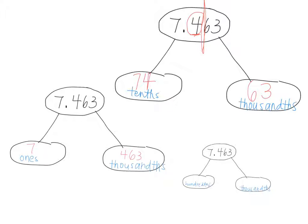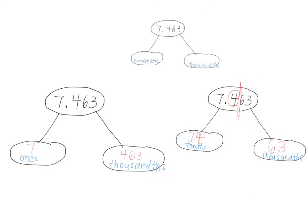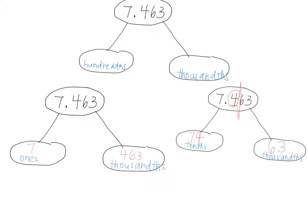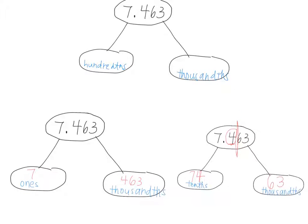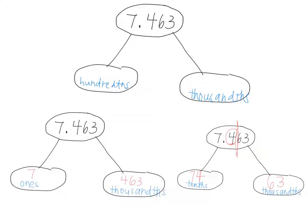Now try this one. What if I have that same number, 7.463, but this time I want to break it up into hundredths and thousandths? Go ahead and write that in your notebook. This time, because I know I want to put it into hundredths and thousandths, I need to look at the hundredths place, which is where the six is. So I know, how many hundredths are there in a one? How many hundredths does it take to make one one? Arun? A hundred. One hundred hundredths equals one one. So if I have seven ones, how many hundredths is that? Seven times one hundred is seven hundred.